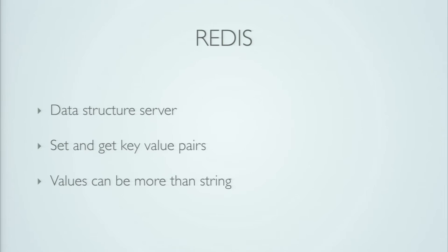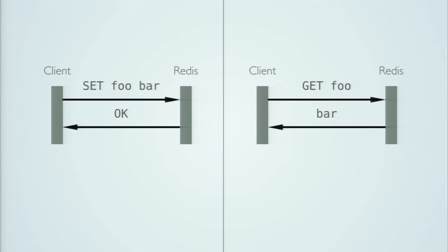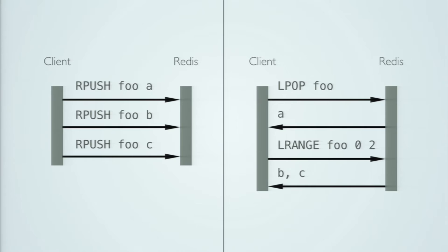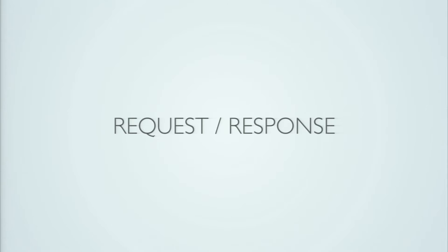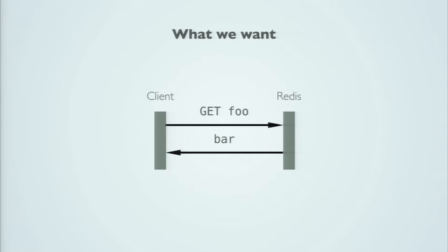The one interesting thing is values can be more than strings. So you have your basic case where you can set foo and bar and get a value back. But in addition to that, I can also have lists. I can say RPUSH — right push onto the foo list — the value of A, like foo.append(A) in Python. I can do that for three elements A, B, and C. Then I can say LPOP — left pop from foo — which returns element A. And then LRANGE from foo zero to two, which is basically a slice, giving me B and C because we popped A previously. So that's the first thing I want to shoot for.